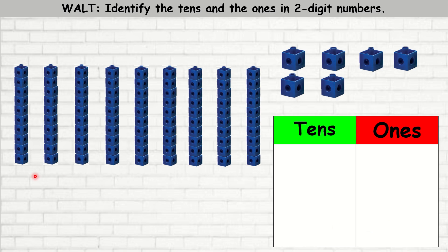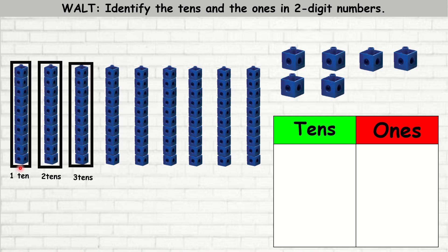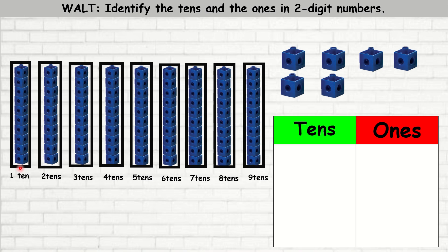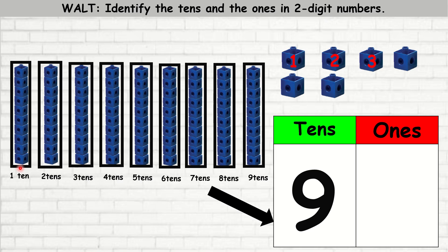All right, let's count the tens again. So one ten, two tens, three tens, four tens, five tens, six tens, seven tens, eight tens, nine tens. So the tens are nine. The ones are one, two, three, four, five, six. There are six ones. To read this number, we would read it as 96.